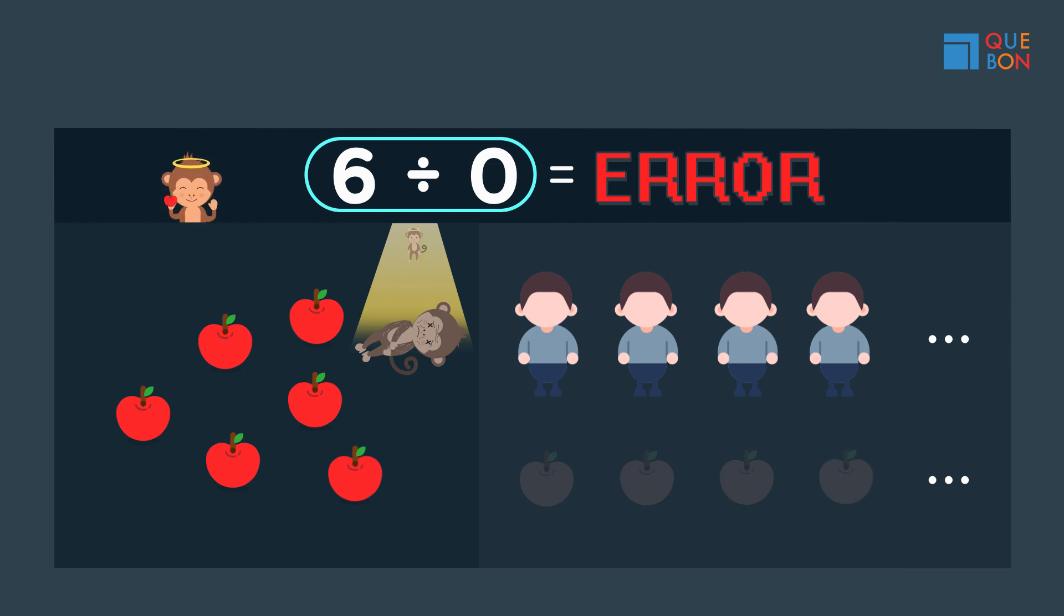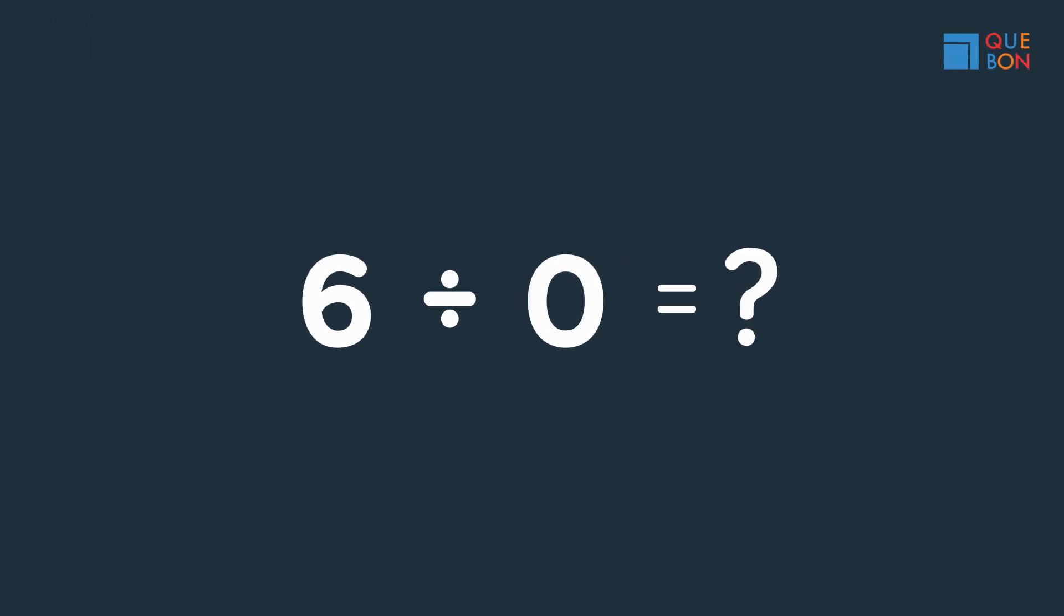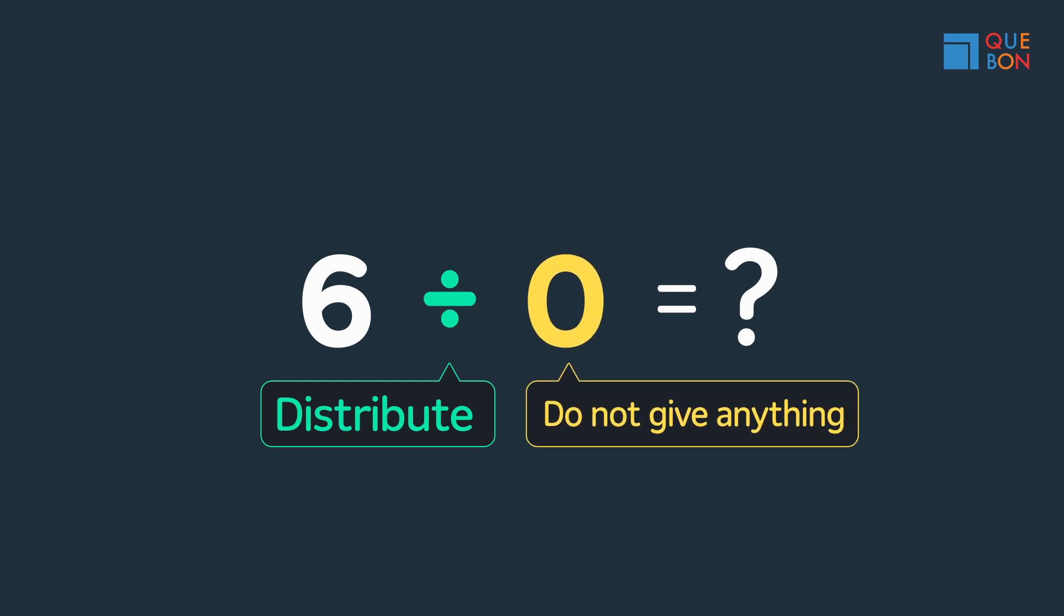Now, let's phrase this question with words. This tells us to distribute. Distribute six things. Zero things to each person. Share zero means to share nothing, which then means to not share at all. These two meanings contradict each other.